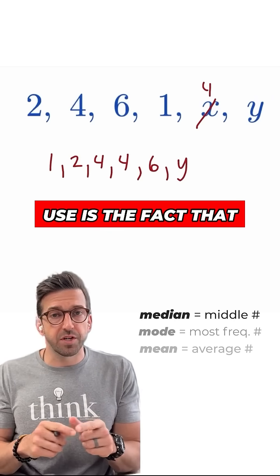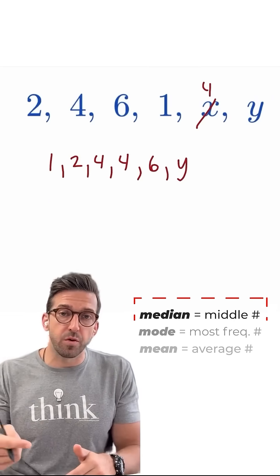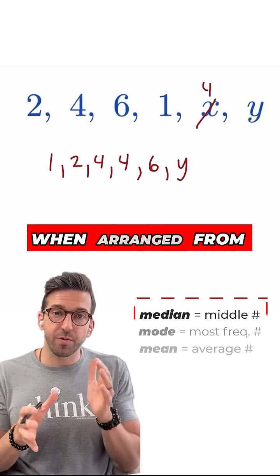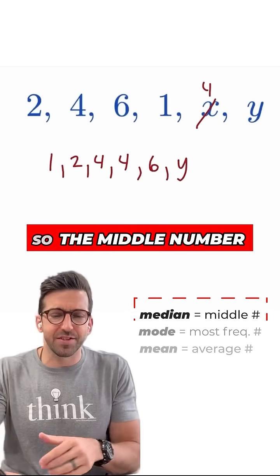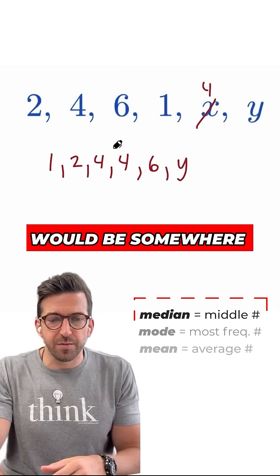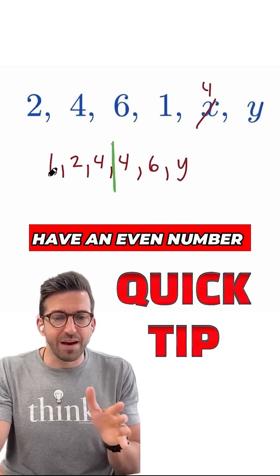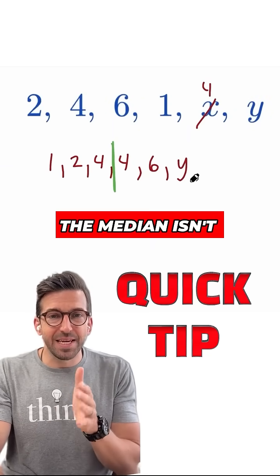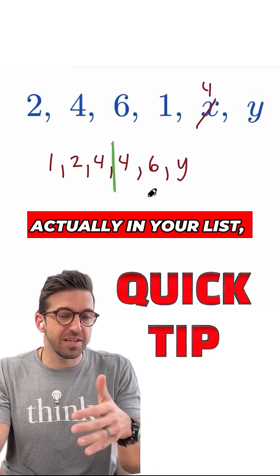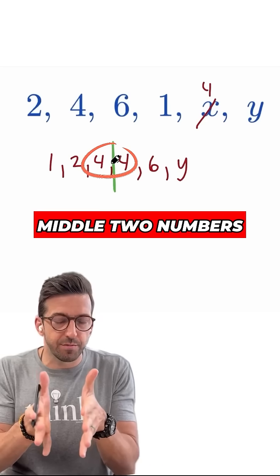The next piece of information I want to use is the fact that the median was four. Remember, the median is the middle number when arranged from least to greatest in a list. The middle number would be somewhere right here in between these two fours. Quick tip. When you have an even number of items in your list, the median isn't actually in your list. It's in between the middle two numbers of your list.